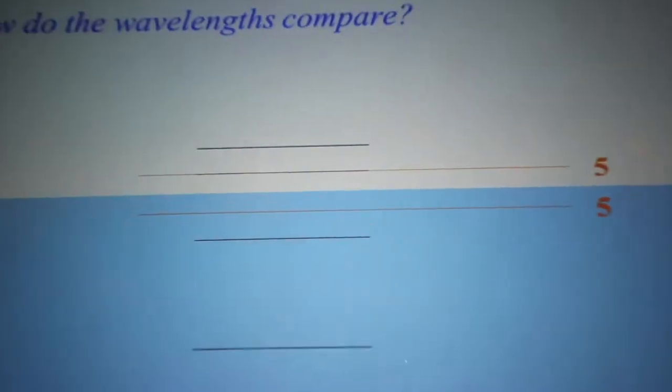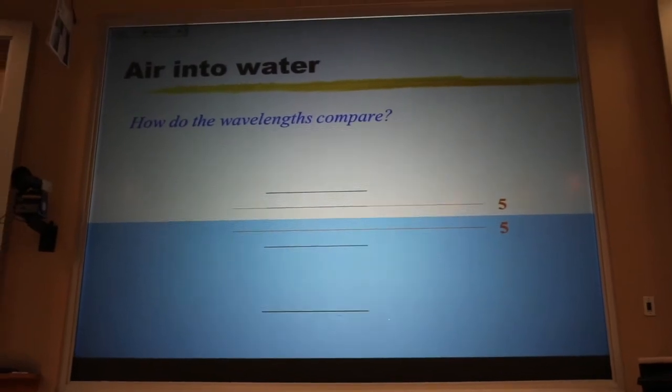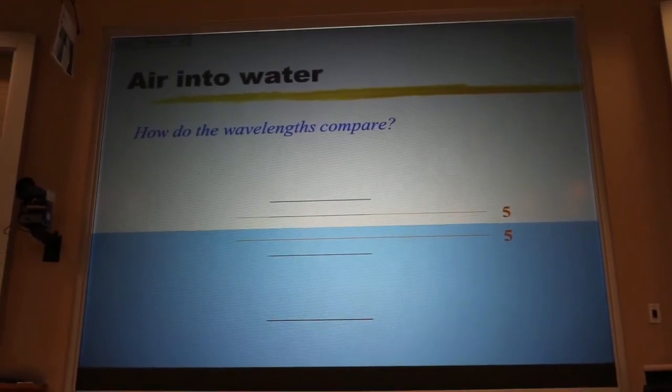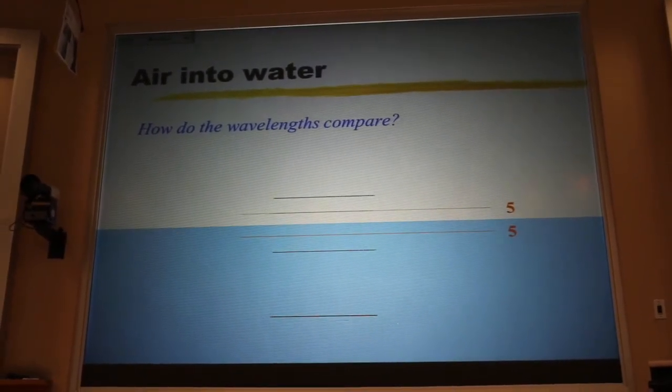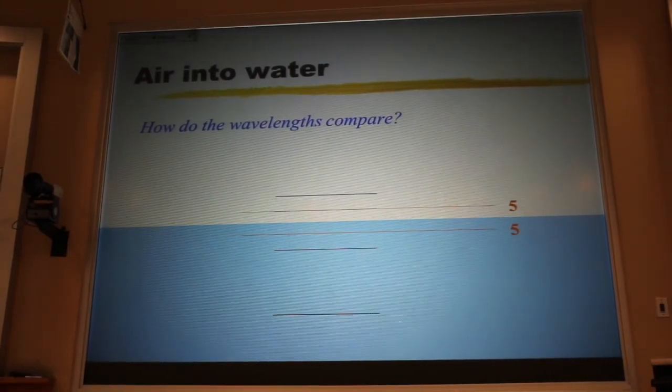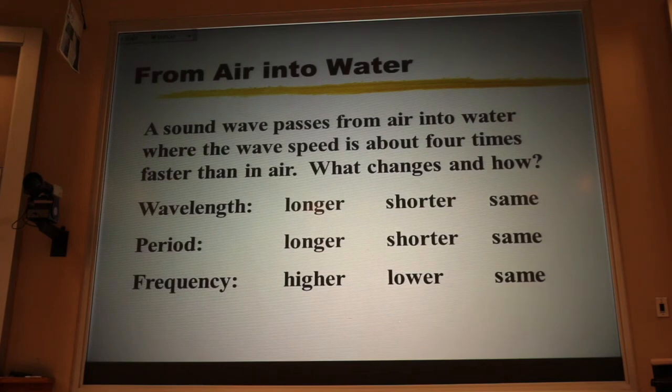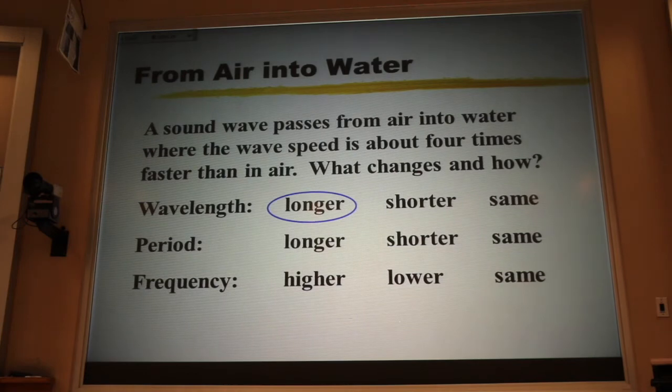What about the wavelengths? Well, because those waves are traveling four times faster in the water, the distance between those wave fronts is four times greater in the water. But the frequency is the same. Now, if we go back to our original question, the wavelength in the water is going to get longer, the period is going to stay the same, and the frequency is going to stay the same.